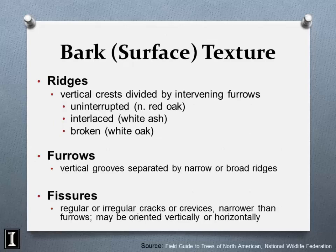For bark surface texture, ridges are the vertical crests of the bark, typically divided by valleys or furrows. They're usually uninterrupted, as in northern red oak. Ridges can be interlaced in a diamond-shaped pattern — seen in white ash, green ash, and mockernut hickory. Ridges can also be broken horizontal, which we find a lot in white oak.